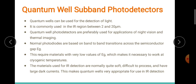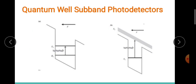Indium arsenide and II-VI compounds can be used in the IR range, but these compounds are a bit difficult to process. They are very soft compounds and they generate a huge amount of leakage currents. So we do not prefer such kinds of homojunctions, and we definitely want to deal with quantum well-based photodetectors.